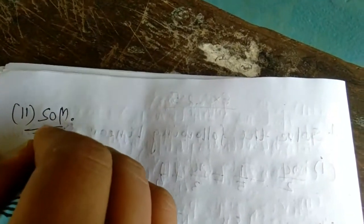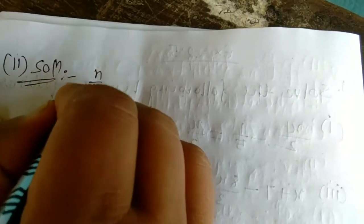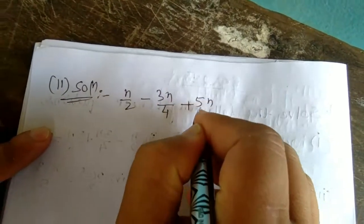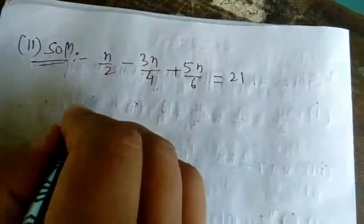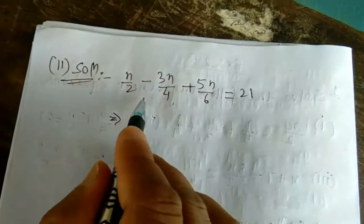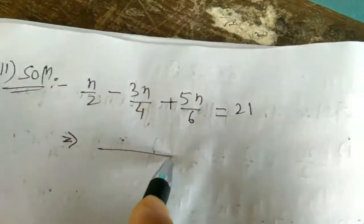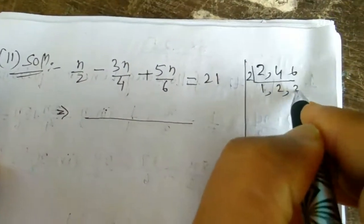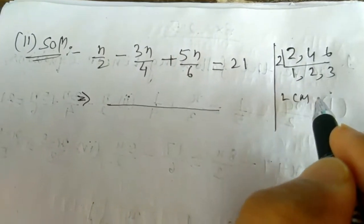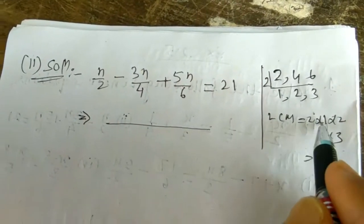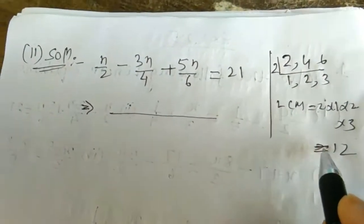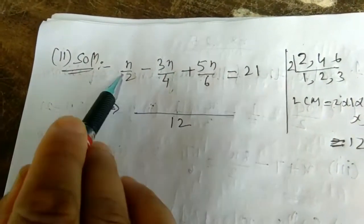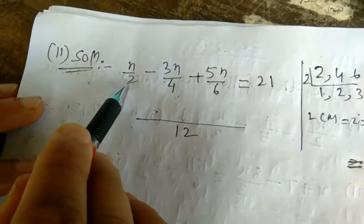Solution to question number 2. It is given: n/2 - 3n/4 + 5n/6 = 21. To find the value of n, we first take the LCM of 2, 4, and 6. Dividing by 2: 2 gives 1, 4 gives 2, 6 gives 3. So LCM = 2 × 1 × 2 × 3 = 12. Dividing LCM 12 by denominator 2 gives 6, so 6n.